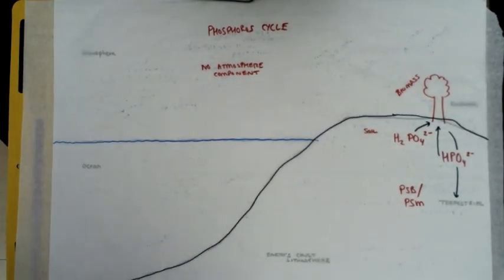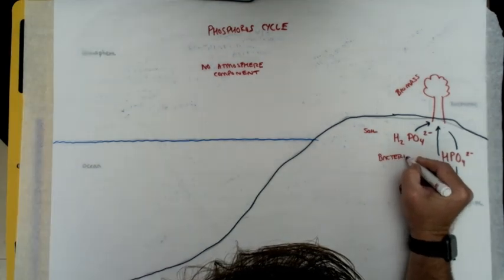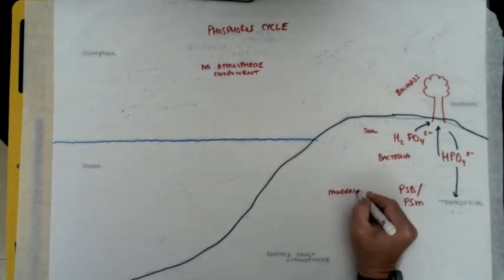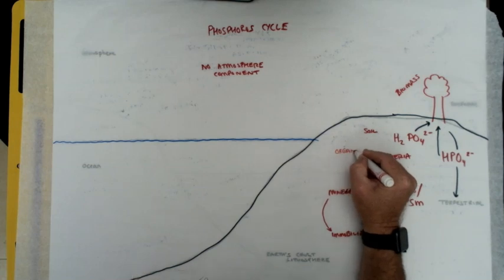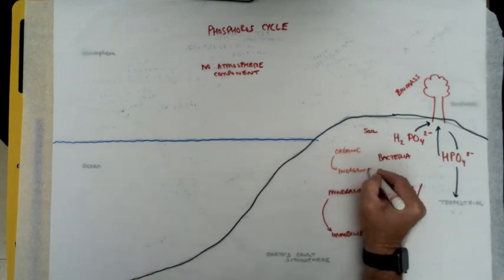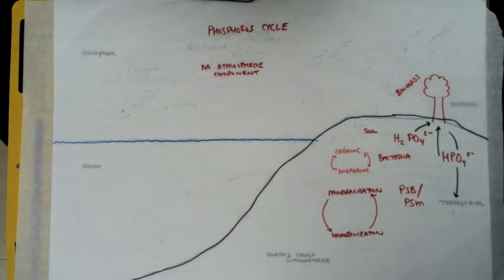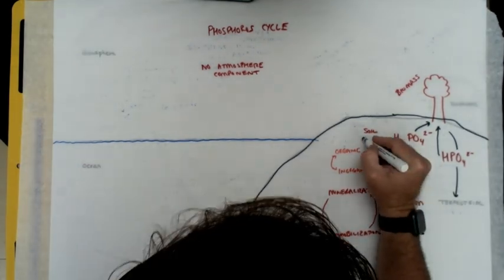So I start with the terrestrial sink and pool in the rock layers and also in the soil and the biomass and look at the different variations of phosphorus and phosphate ions in the soil and the bacteria and the movement between the inorganic and organic phosphorus.